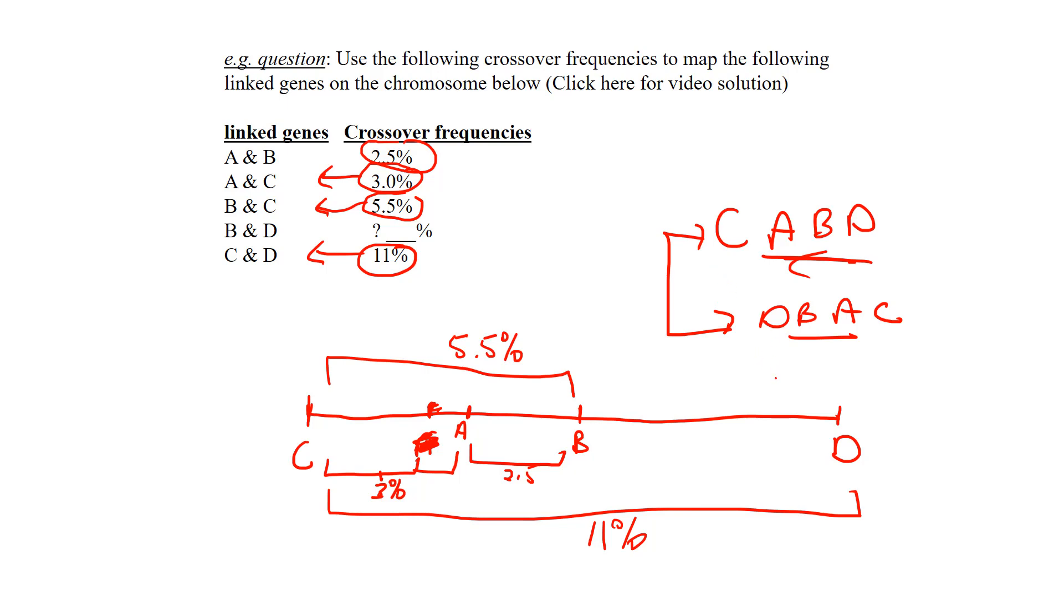The only other issue we have here is this unknown distance right here. In my notes, sometimes I say you have to subtract known crossover frequencies to find an unknown. They're saying this is unknown. The best way to do that is take the biggest chunk—C and D is 11 percent.